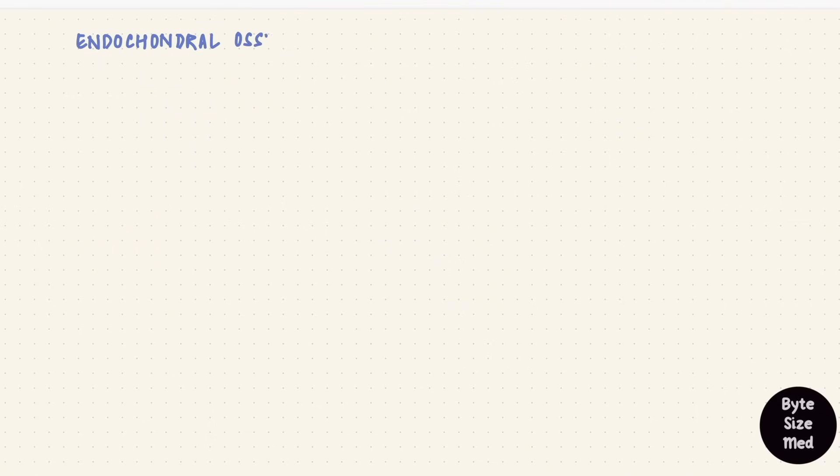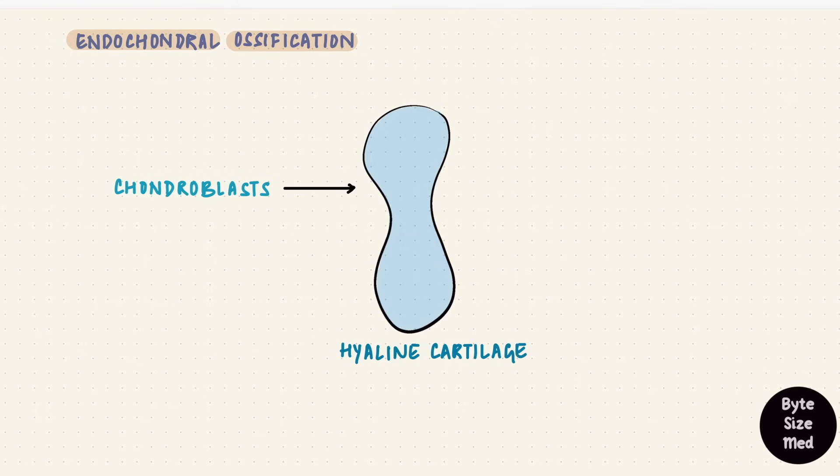Endochondral ossification, however, is a little longer. Here the mesenchyme first forms chondroblasts, which synthesize the cartilage matrix, the type 2 collagen and ground substance. The cartilage forms in the shape of the bone that's going to replace it. This is hyaline cartilage, and it has those chondrocytes in lacunae. It is surrounded by the perichondrium.